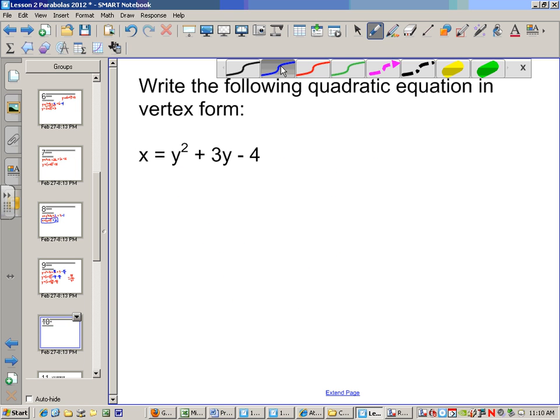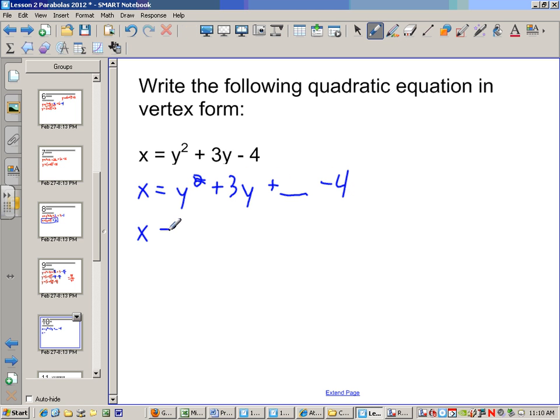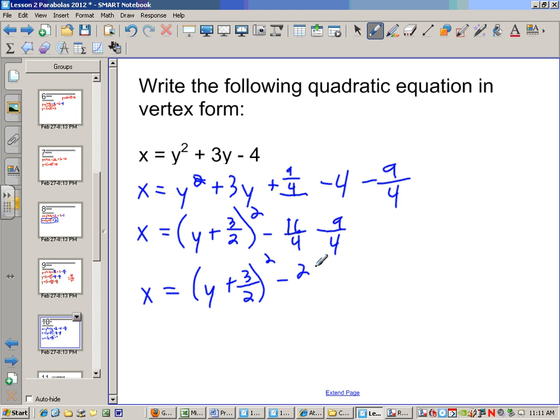Try this one on your own. We have y squared plus 3y plus something minus 4. If we go to this next row, y plus 3 halves squared. What I need to add here to make it a perfect square would be 9 fourths. So if I add it there, I have to subtract it there. 4 would be 16 fourths. 16 minus 9 would be 25 fourths. 25 fourths would be 6 times 4 is 24, so it would be negative 6 and 1 fourth.